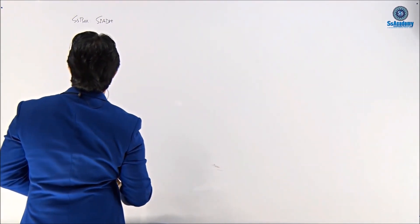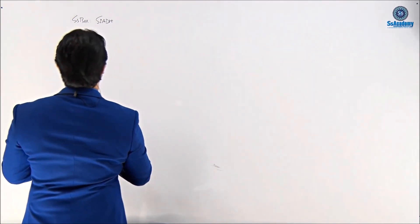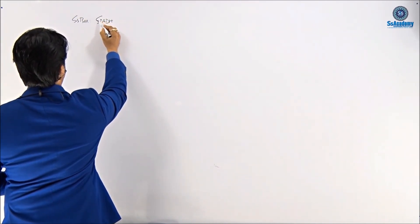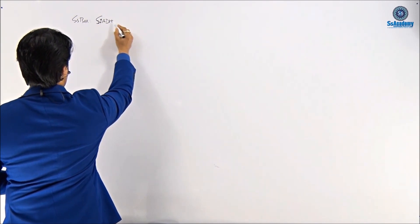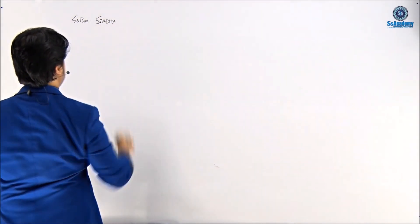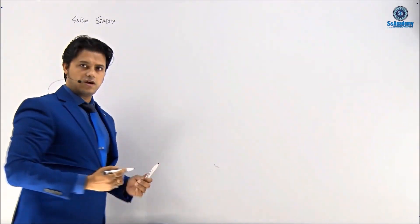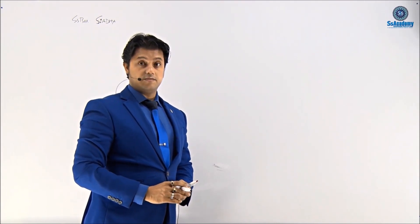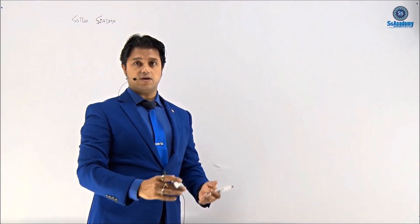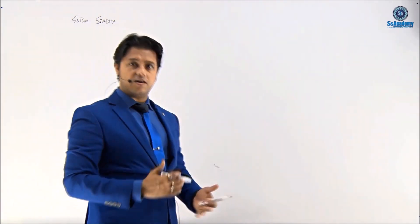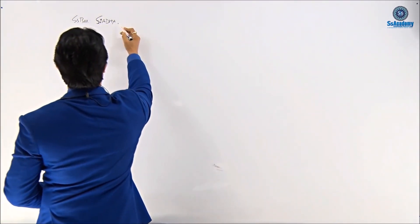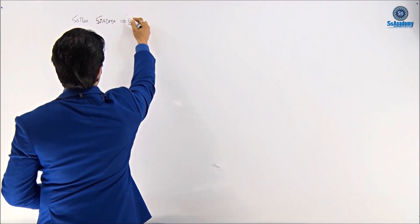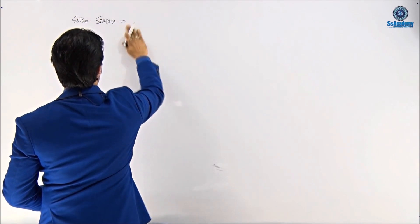So SIADH — if you see, the 'SI' part, I'm writing 'A', 'C', 'Aadha'. Aadha is a word from Bengali and Hindi and other languages — Aadha means half. So 'SI-Aadha' means she is Aadha, she is a half. So this is the rule of half.